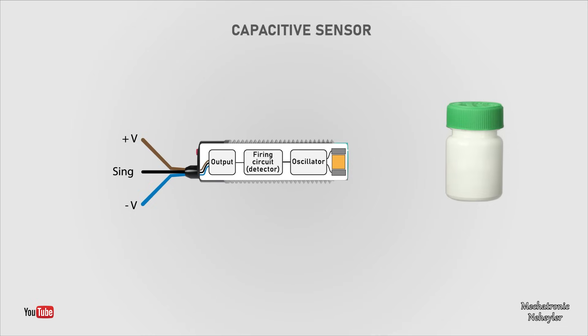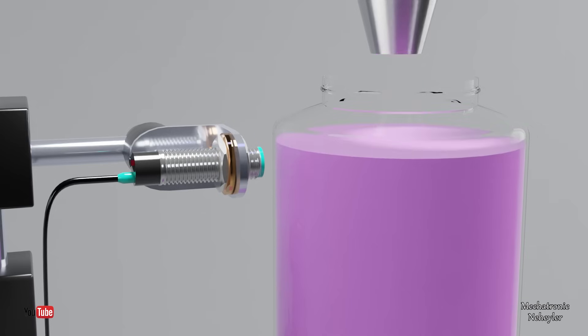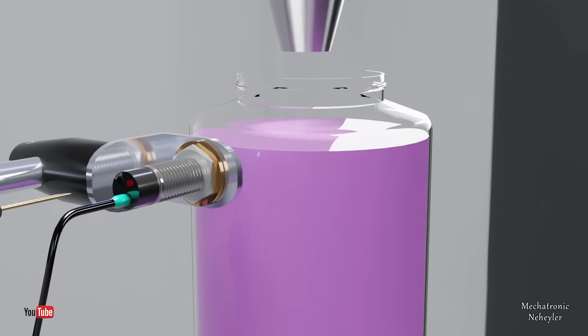The detection distance depends on several factors, including the material of the object to be detected, the application environment, and the distance from which the detection is to be performed. Most sensors come with an adjustment bolt — for example, if the liquid in the container is not detected, then the bolt must be rotated to adjust the detection distance for the material or object.